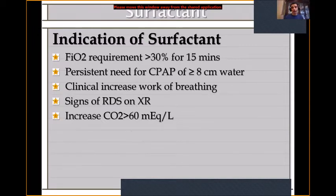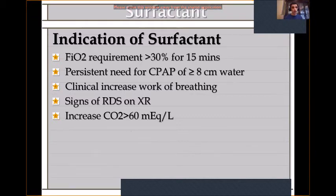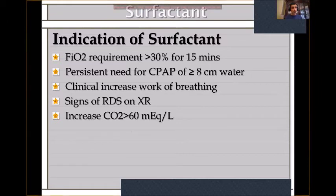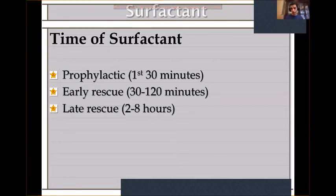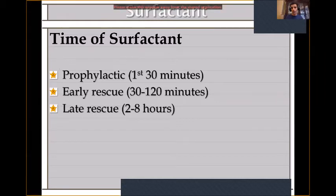One of the components of initial care is surfactant. We have a surfactant protocol: we give it if the baby is premature and needs FiO2 more than 30% for 15 minutes, persistent CPAP need above 8 cm H2O, increased work of breathing, clear RDS on x-ray, or CO2 at delivery above 60. Regarding timing, there are three types: prophylactic (within 30 minutes — no longer recommended), early rescue (30 minutes to 2 hours — the evidence-based window), and late rescue (no evidence). The appropriate time is between 30 minutes and two hours.